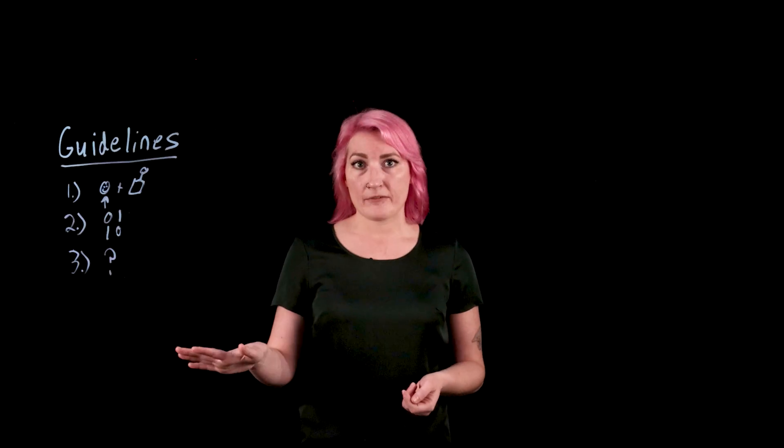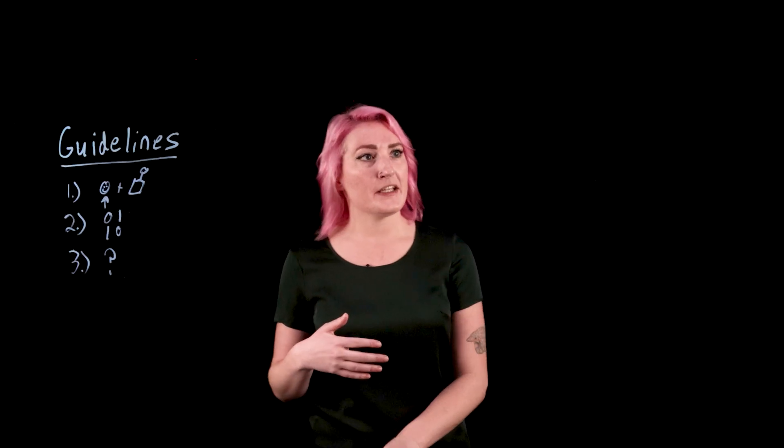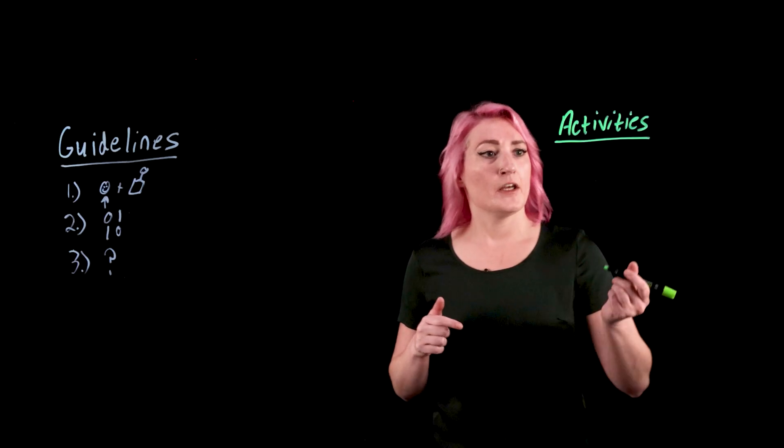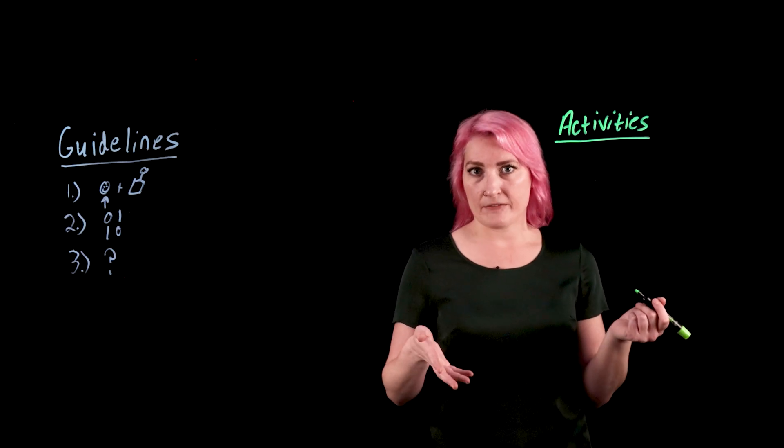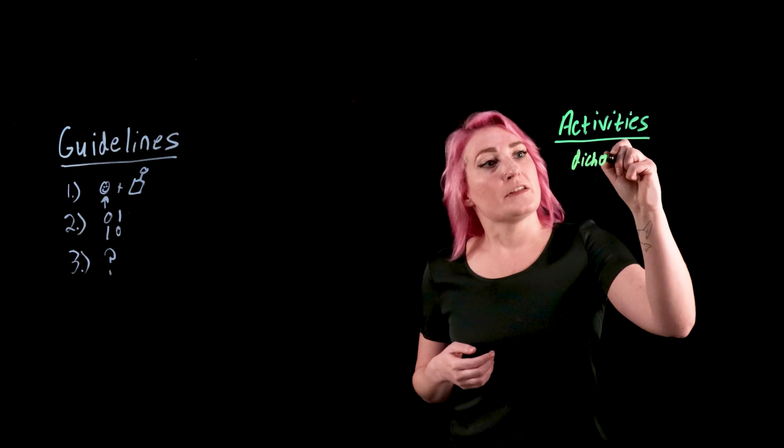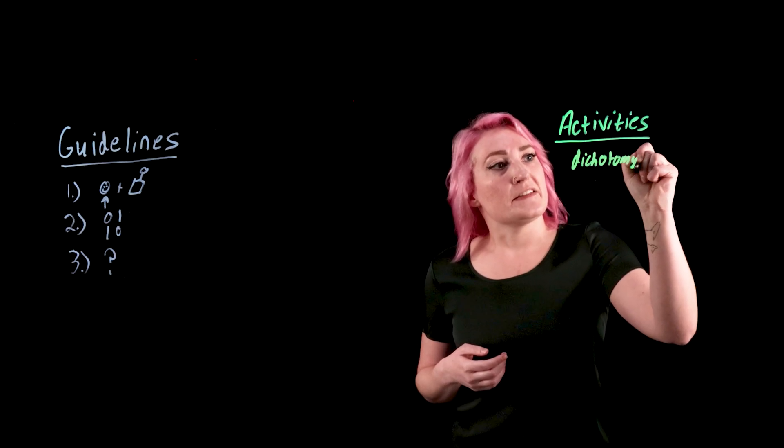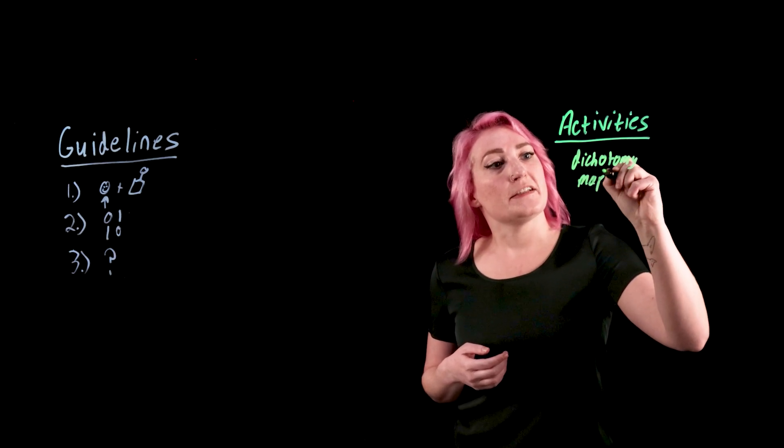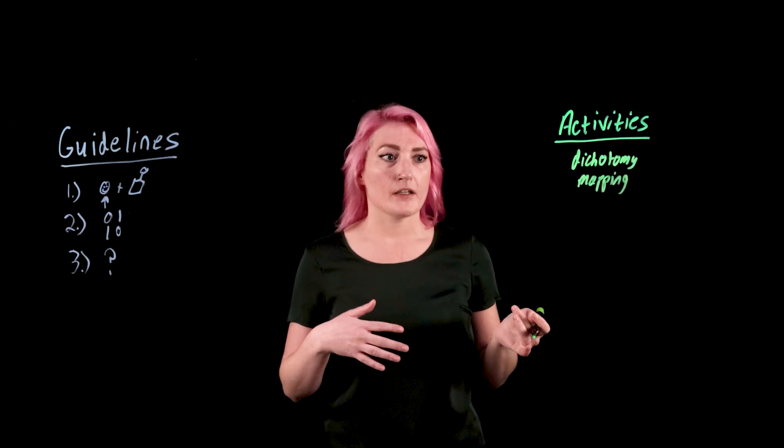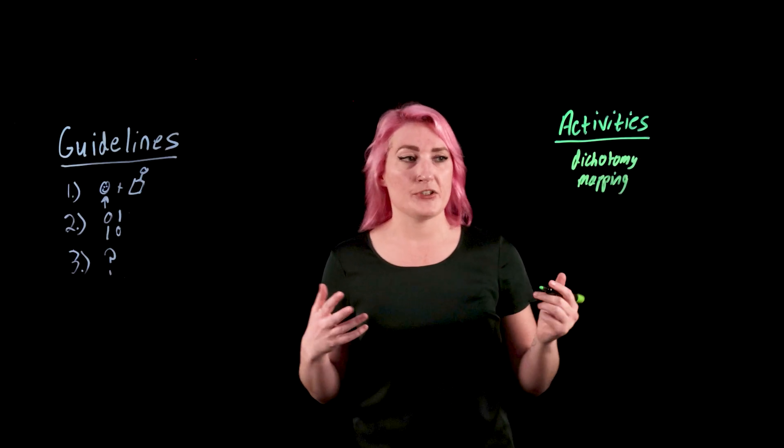So now we have our rules. How do we determine if we are actually following them or breaking any sort of guidelines? So there are a few different design thinking activities that you could try. One of them is called dichotomy mapping, and basically what this means is that first we're going to list all of the features of our solution, and then we're going to list the benefits and what they're meant to be used for.